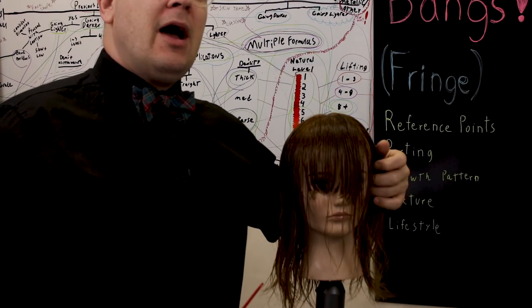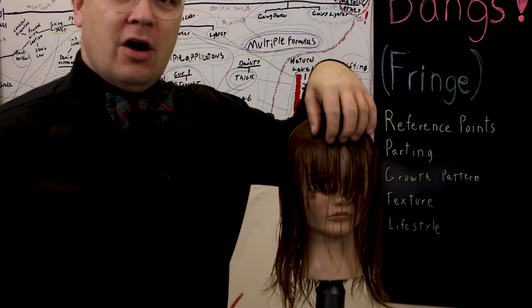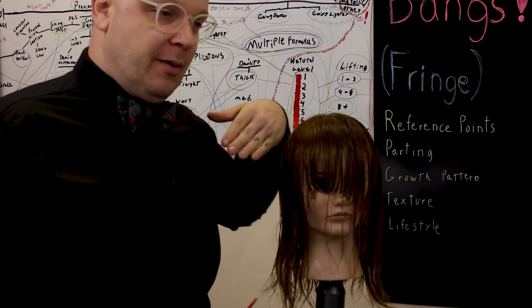So today we're going to talk about how someone who parts their hair on the side can have a fringe that can accommodate parting on either side. And that's called a teardrop fringe.